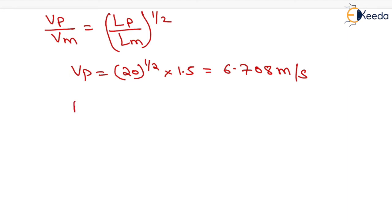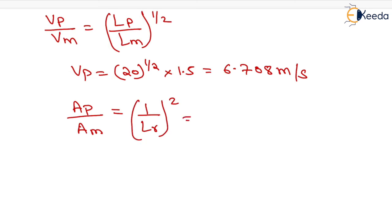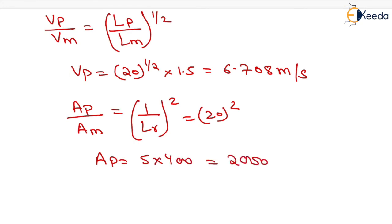Now we calculate the area of the prototype. Area of prototype upon area of model equals 20 squared. So area of prototype equals 5 into 400, which equals 2000 meter square. That is the area of the prototype.